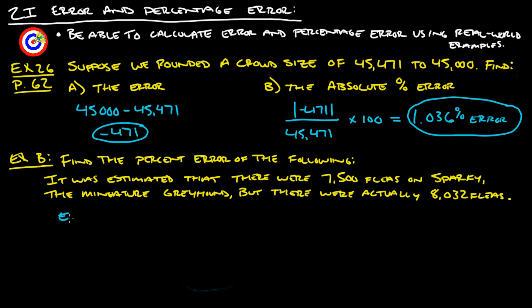First thing we want to do is find the error, and that would be our estimate, which is 7,500, and then subtract our actual amount, which is 8,032, which gives us negative 532 as the actual error.